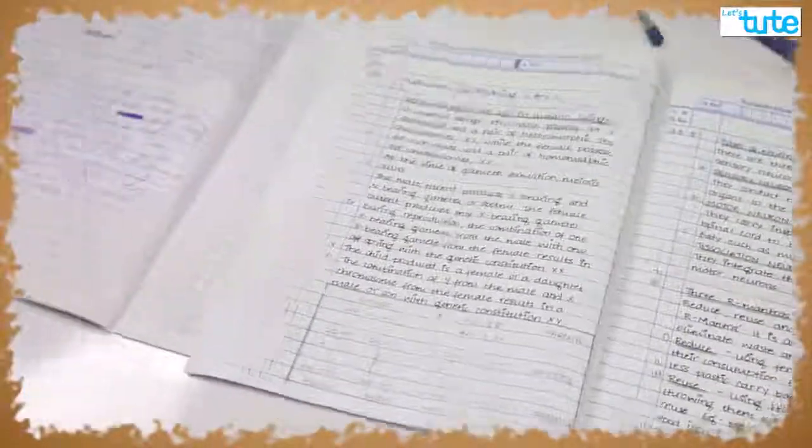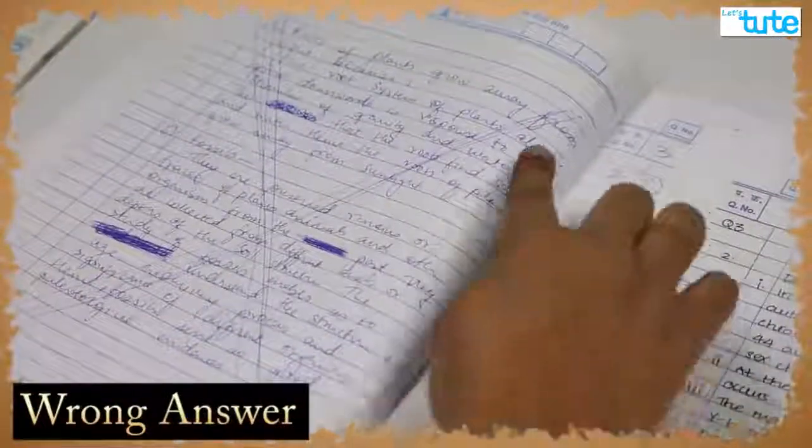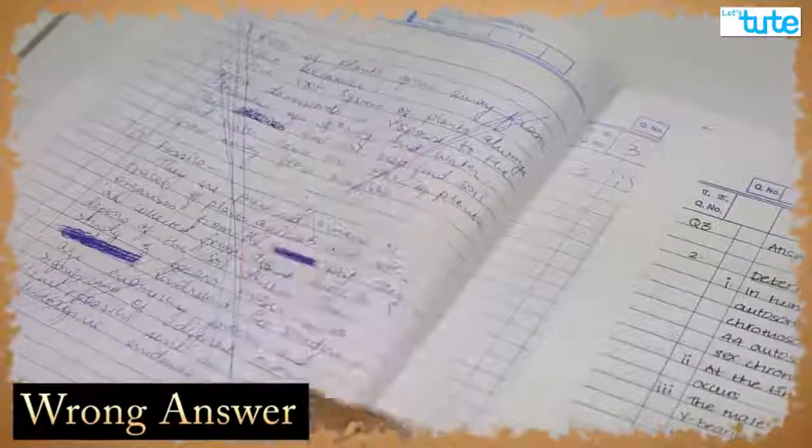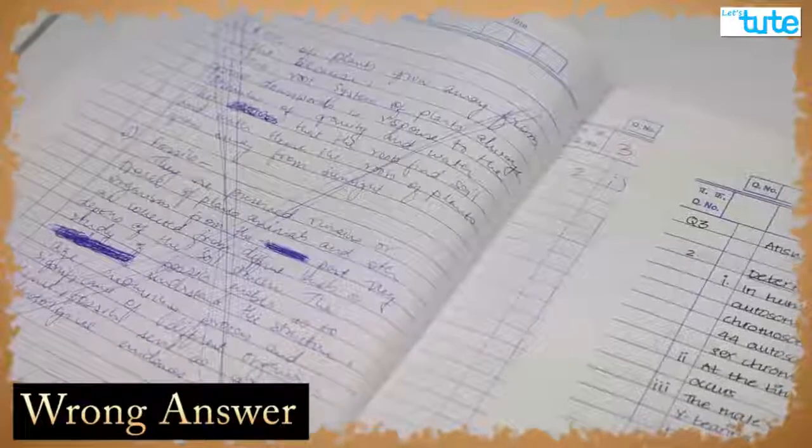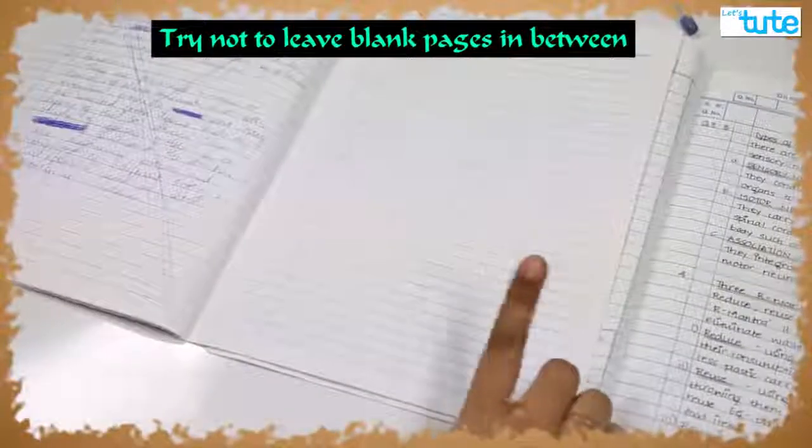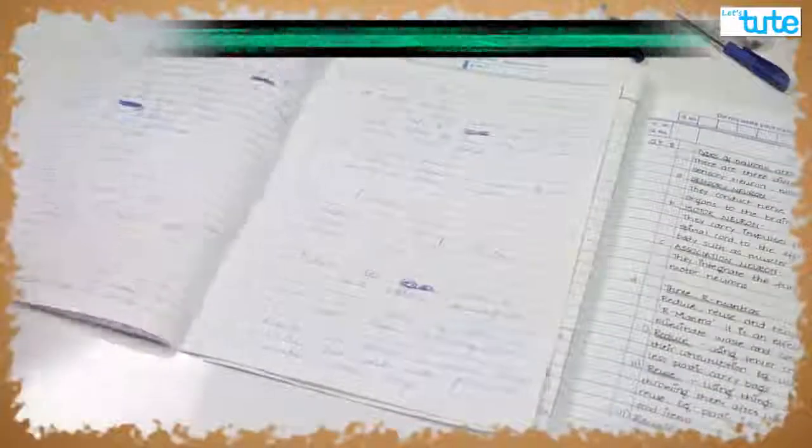And suppose if you have written an entire answer wrong, don't cut it this way. Draw just one diagonal line across the answer and rewrite the correct answer. As much as possible, try not to leave such blank pages in between.